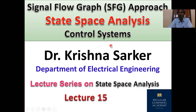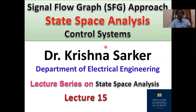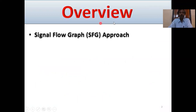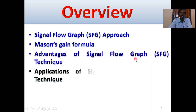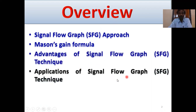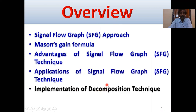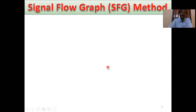Generally, this is decomposition techniques. Decomposition techniques are mainly four types: signal flow graph techniques, direct decomposition techniques, parallel decomposition techniques, and cascade decomposition techniques. This is the signal flow graph technique. Decomposition techniques mainly convert transfer function to state equation, state matrix, state diagram, signal flow graph, and at last the stability of the system. This is lecture series on state space analysis, lecture number 15. Overview: signal flow graph approach, Mason's gain formula, advantage of SFG technique, application of signal flow graph technique, implementation of decomposition technique, and signal flow graph methods.